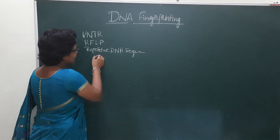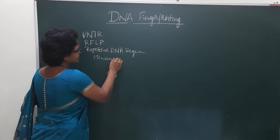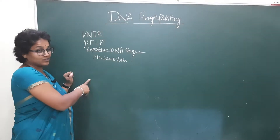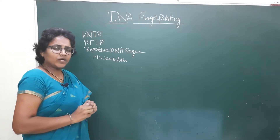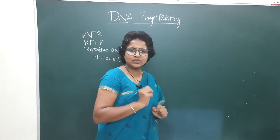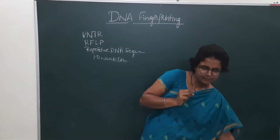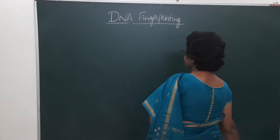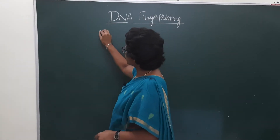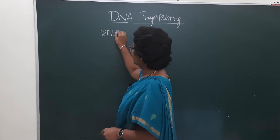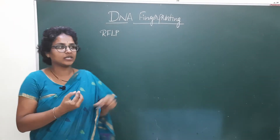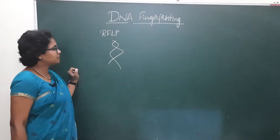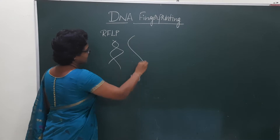Mini-satellites — all of these are synonyms to one another, but we have to find out the little bit of difference between them. First, we take the RFLP — restriction fragment length polymorphism. For example, this is the DNA, a stretch of DNA.